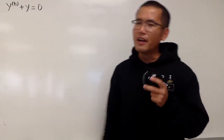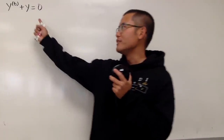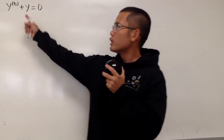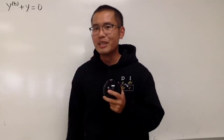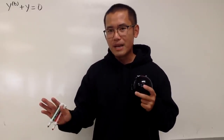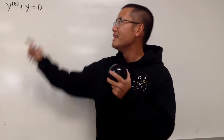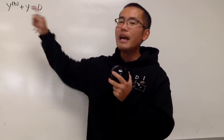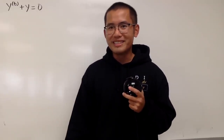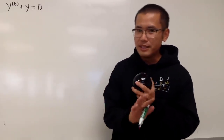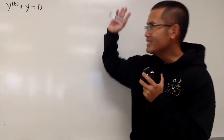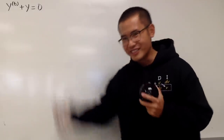Let's do some math for fun. Here we are going to solve this differential equation, and yes, the order right here is 6, because of the 6th derivative. However, this is actually not that bad, because this is linear and also with constant coefficients. So seriously, it's not that bad. However, as always, please pause the video and try this first.